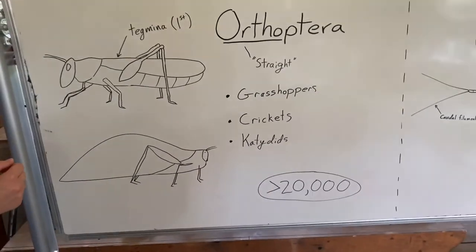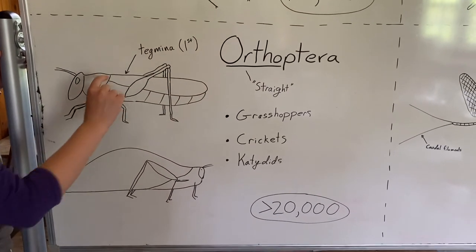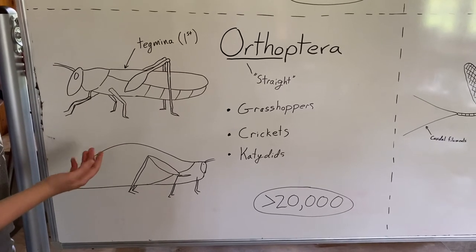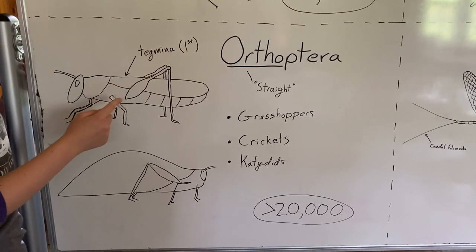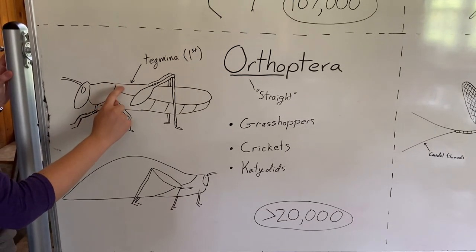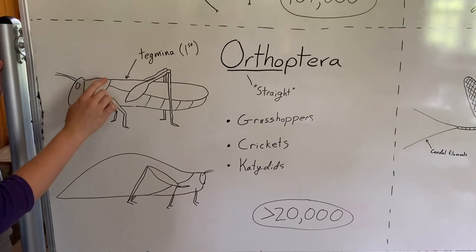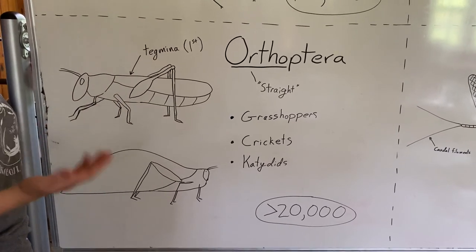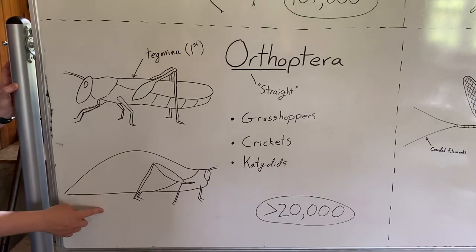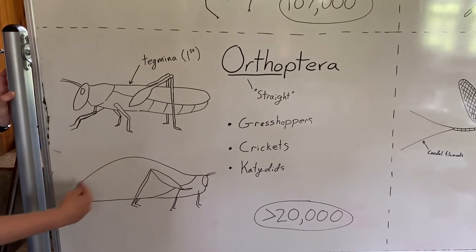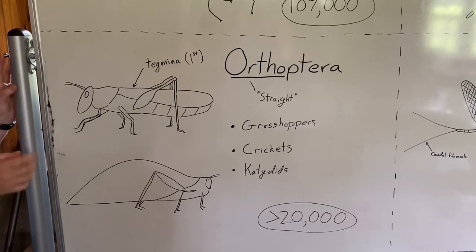The last order is Orthoptera, which means straight wings — they have very long, thin wings along their back. This includes grasshoppers, crickets, and katydids. Grasshoppers have really strong back legs for jumping very far distances. Their first wing is similar to the beetles' in that it has a thicker, leathery texture, but it's made of a different substance called tegmina, and then their second wing is membranous. This group also includes katydids — some funny-looking insects that often disguise themselves as leaves. You'll see a big green leafy insect, often making a katydid noise in the summer.